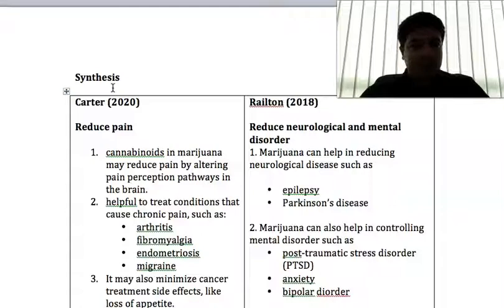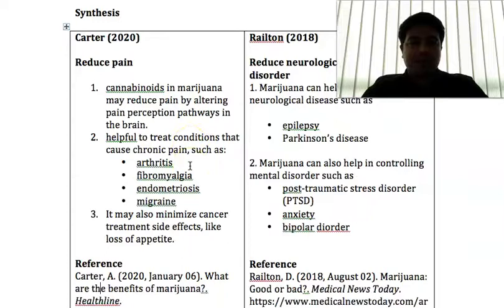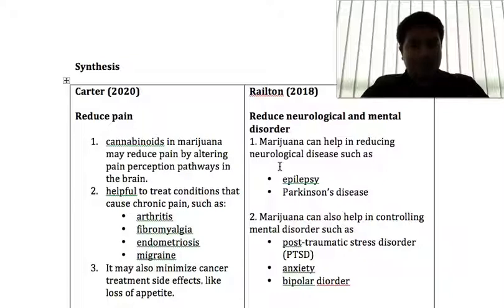I don't have any books, but if I did, I would also refer to books or magazines. It is easier for me to go to the websites. So I have four citations here with a lot of points that I can use in my academic essay on the topic: Should marijuana be legalized?